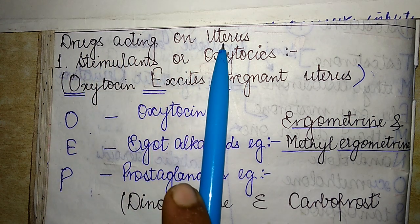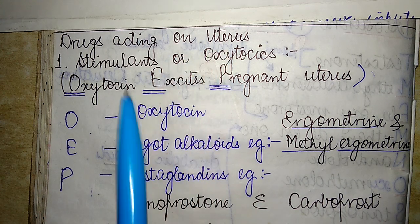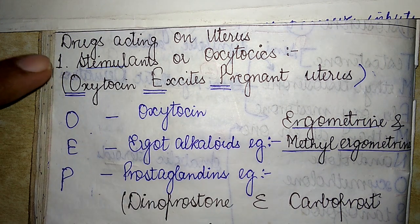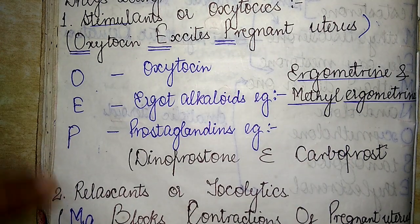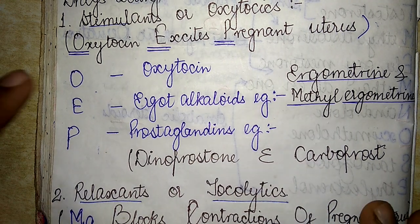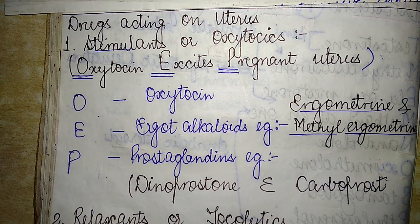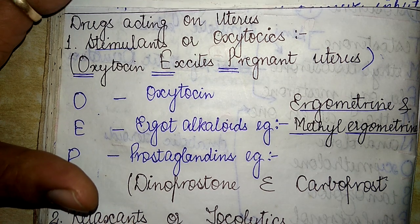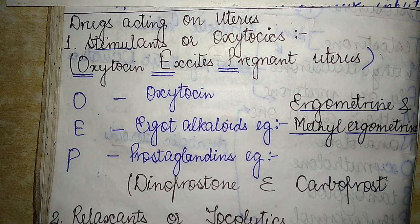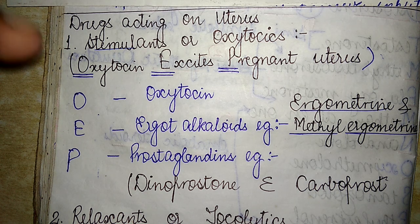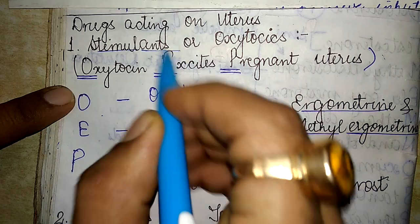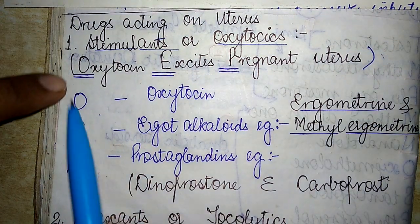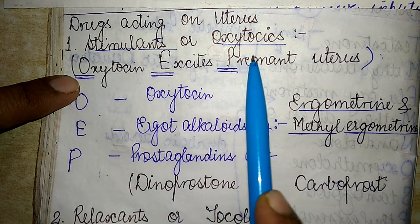The drugs acting on the uterus can be broadly classified into two categories: the stimulants or oxytocics, and the relaxants or tocolytics. The mnemonic for the stimulants or oxytocics is: 'Oxytocin Excites Pregnant Uterus.'